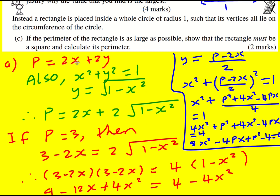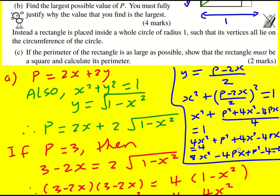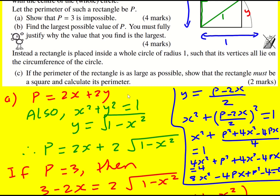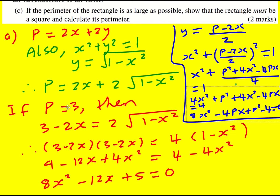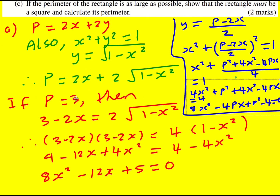In part b we're going to use the general form because we'll be working more generally. We've shown that p equals 3 is impossible, and now we need to find the largest possible value of p. We can use the same general equation but not set p equal to 3 — instead keep p as a variable.